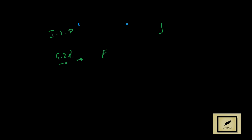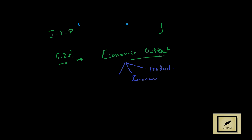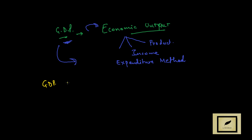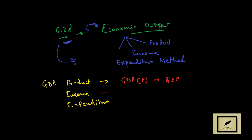Now, the GDP is the tool to calculate Economic Output, and it has three ways to calculate it: that is the Product Method, where we calculate the Product Value; then the Income Method; and then the Expenditure Method. The GDP calculated by the Product Method is known as GDP-P or simply GDP, GDP-I is denoted for the Income Method, and GDP-E is calculated by the Expenditure Method.